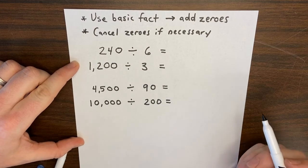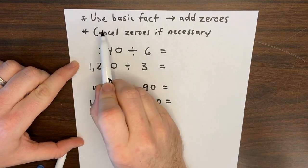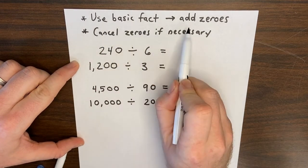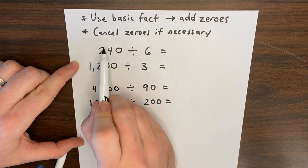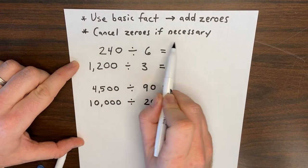When dividing with multiples of 10, we really can just use the basic fact and then add zeros. We'll also cancel any zeros if necessary.